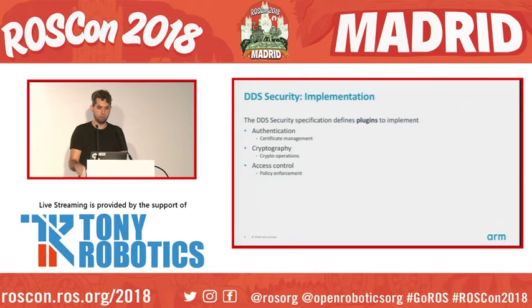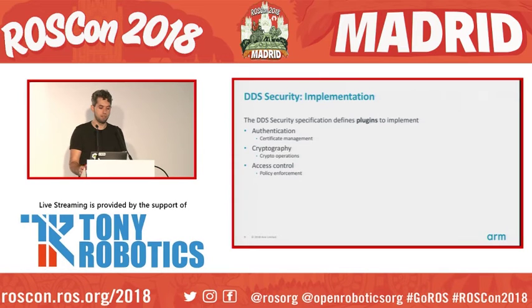Going down into the implementation layer, there are five plugins — that's how it's approached in the specification. For our work, we have been mainly focusing on three of them: authentication, cryptography, and access control, though access control we haven't yet started implementing.